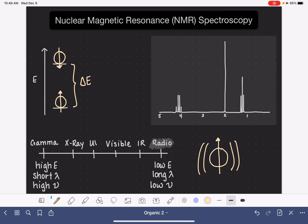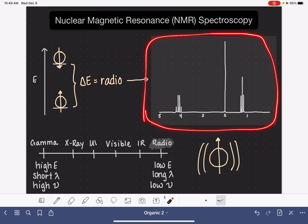This energy that they emit corresponds to radio frequency—of course, because that's what type of energy it took to cause the flip in the first place. This radio frequency is then translated into a spectrum, which looks something like this.